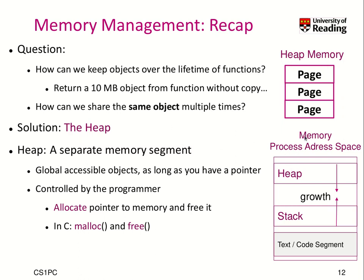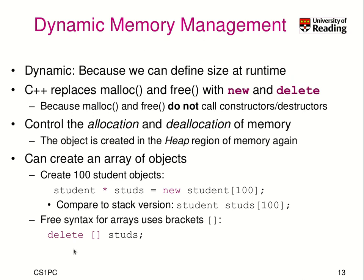Heap memory is organized in pages. In C we had malloc and free — malloc to allocate memory on the heap and free to release it, returning it to the pool so we can allocate it again. This is called dynamic memory management. It's dynamic because we can define properties at runtime, which is particularly useful when we have data structures and want to change their size at runtime.